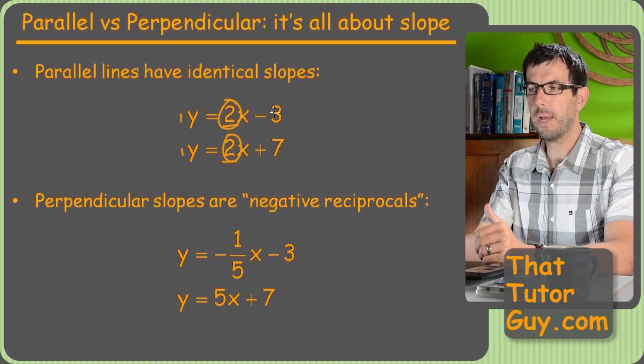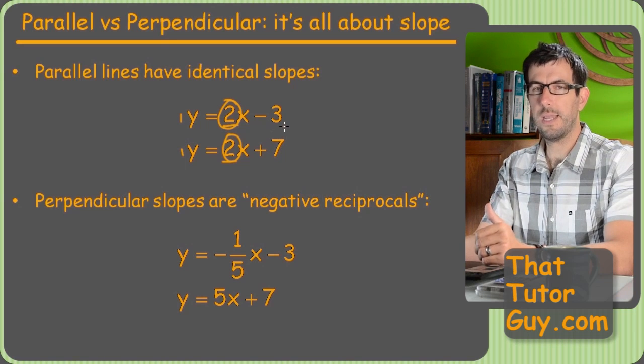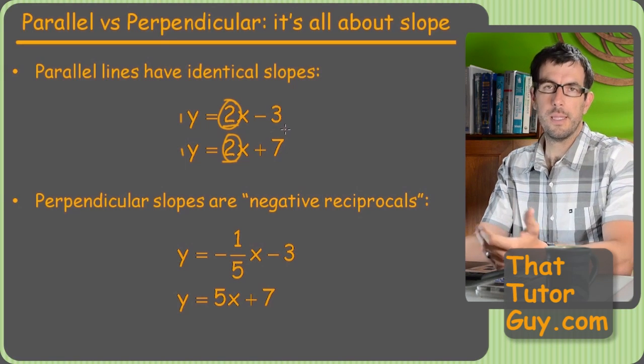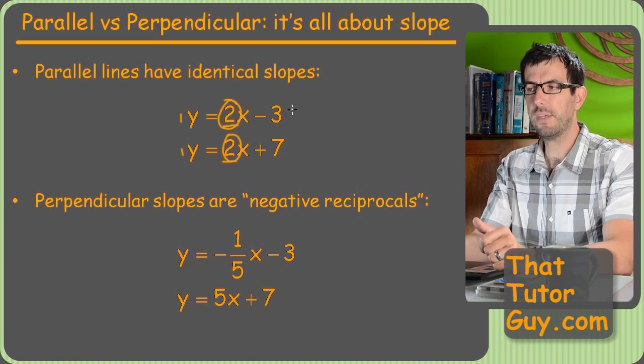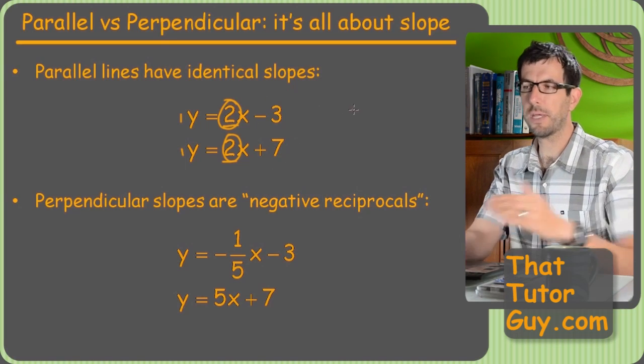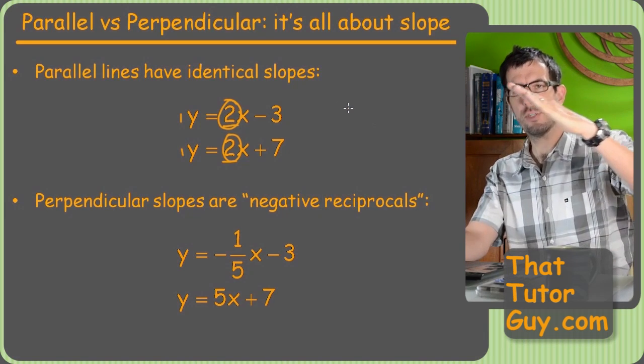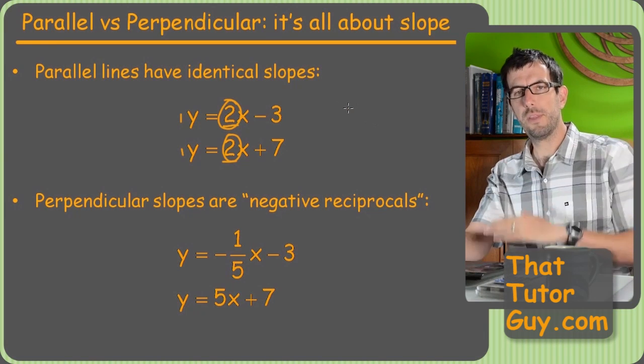And they have different y-intercepts. If they had both been minus three or seven, then they'd have the same intercept, same slope, maybe the same line, right? But since these have different intercepts, they're going to cross the y-axis at different spots, but going in the exact same direction. So that means they're just offset a little bit, but they'll never cross.